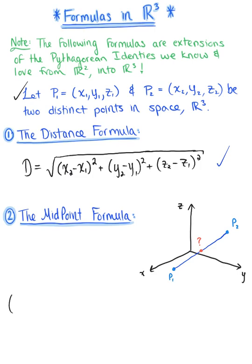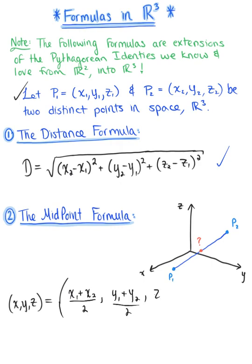The midpoint formula gives us the ordered triplet (x, y, z), where each component is defined as the average of the corresponding coordinates: x = (x₁ + x₂) / 2, y = (y₁ + y₂) / 2, and z = (z₁ + z₂) / 2. This provides us with the midpoint of our line segment.